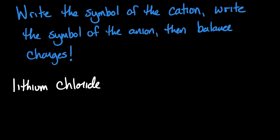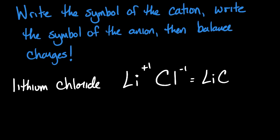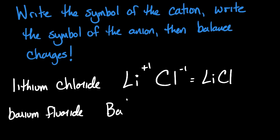Let's deconstruct two earlier examples. For lithium chloride, I write the symbol and charge of lithium, then the symbol and charge for chloride. Since these charges are +1 and −1, the compound has a neutral charge. For barium fluoride, I write the symbol and charge of barium, then the symbol and charge of fluoride. In this case our charges do not cancel each other out, so we need to add subscripts to our formula.